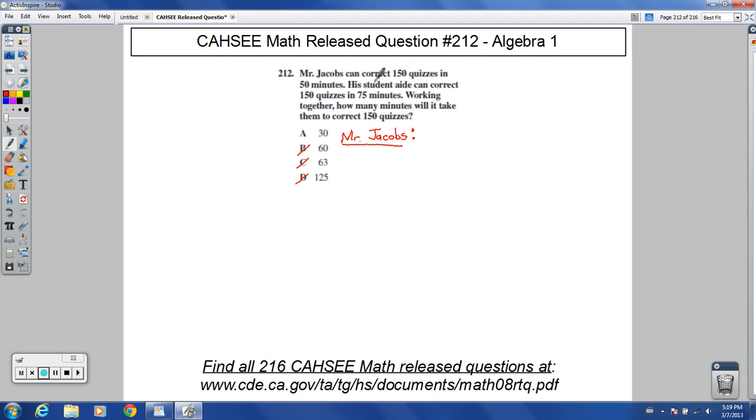So Mr. Jacobs: 150 quizzes in 50 minutes. If we take 150 and divide by 50, the zeros cancel out. You'd have 15 over 5, which equals 3 quizzes per minute. Let's write that down.